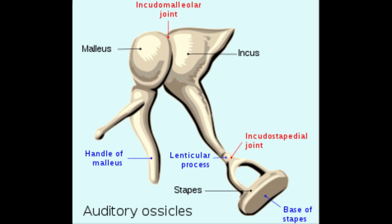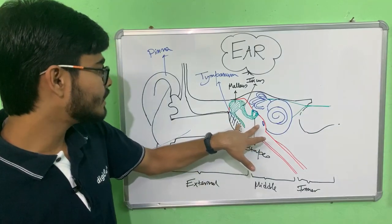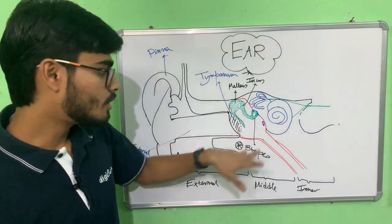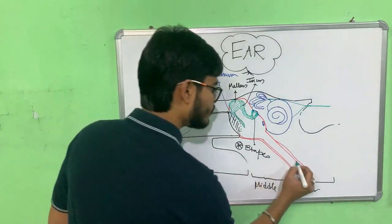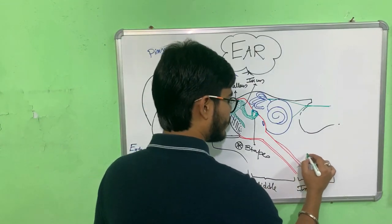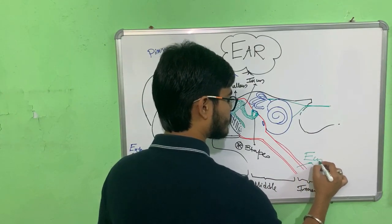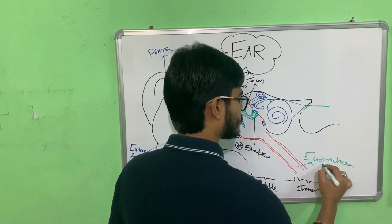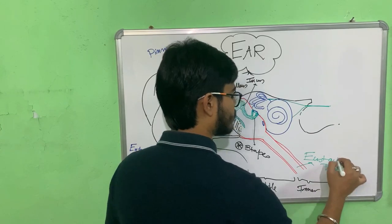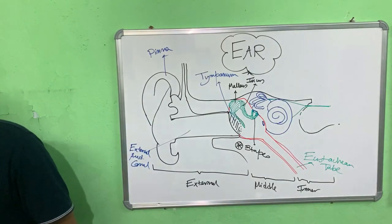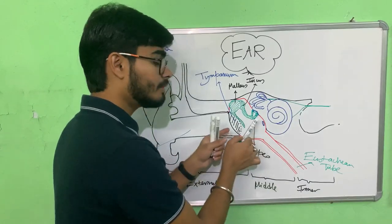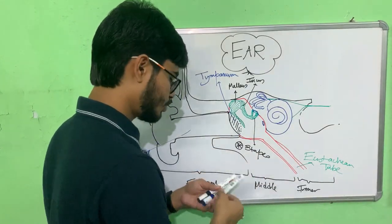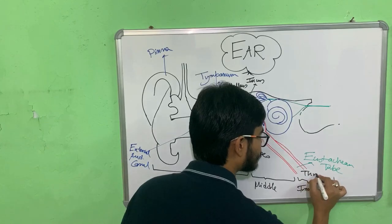The ear ossicles are contained within the middle ear cavity. This red-colored tube is the Eustachian tube. Its function is to connect the middle ear cavity with the throat.